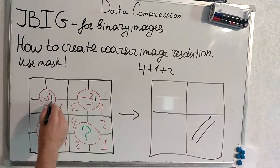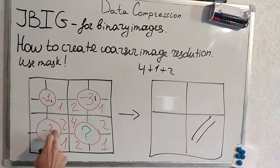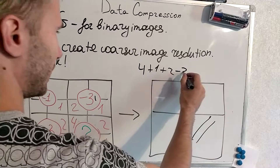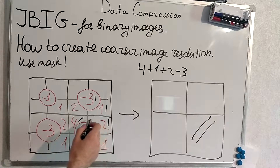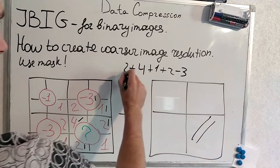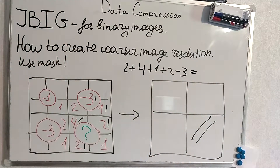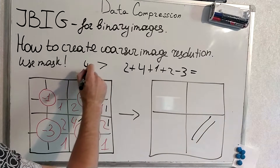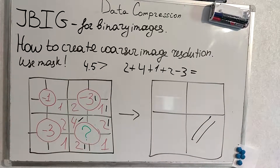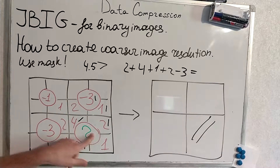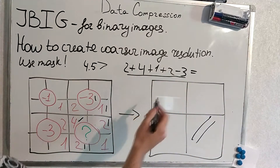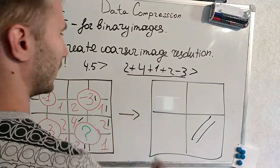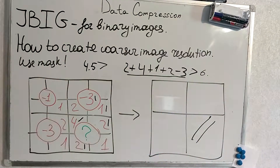If certain neighboring pixels are black, we subtract something from our sum — for example, subtract 3. If we have specific pixels black, we sum up 4, 2, 2, and 1, then subtract 3. If this weighted sum is more than 4.5, then the resulting pixel will be black. In our calculation: 6 minus 3 is 3, plus 2 is 5 — it's more than 4.5, so this pixel is black.